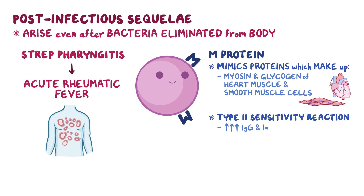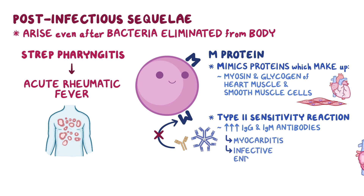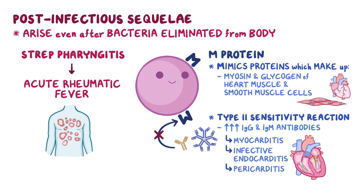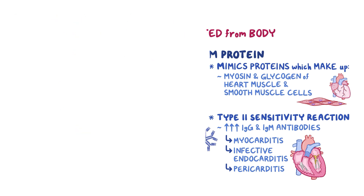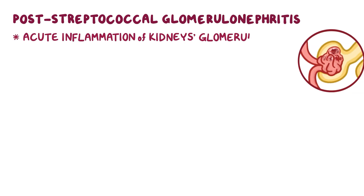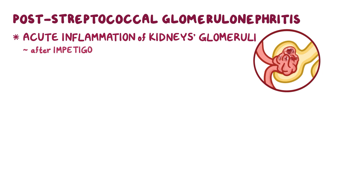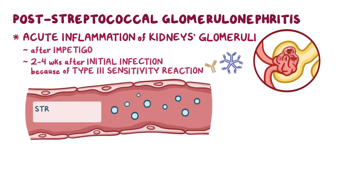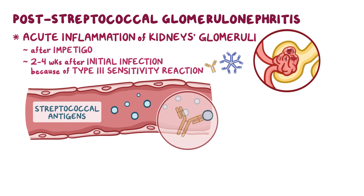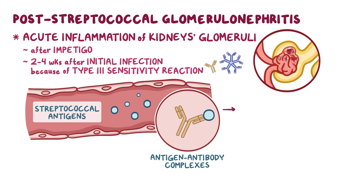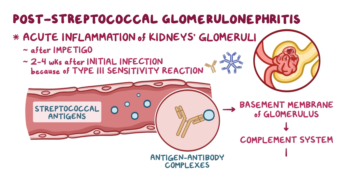The immune system releases IgG and IgM antibodies aimed to destroy the bacterial M proteins, but instead they attack the heart muscle causing myocarditis, the heart valves causing infective endocarditis, or the pericardium causing pericarditis. Another post-strep pyogenes complication is post-streptococcal glomerulonephritis — acute inflammation of the kidney's glomeruli, most commonly seen after impetigo. It typically occurs 2–4 weeks after the initial infection due to a type 3 sensitivity reaction, where streptococcal antigens combine with antibodies to form antigen-antibody complexes deposited in the basement membrane of the glomerulus, activating the complement system and attracting neutrophils, resulting in kidney damage.